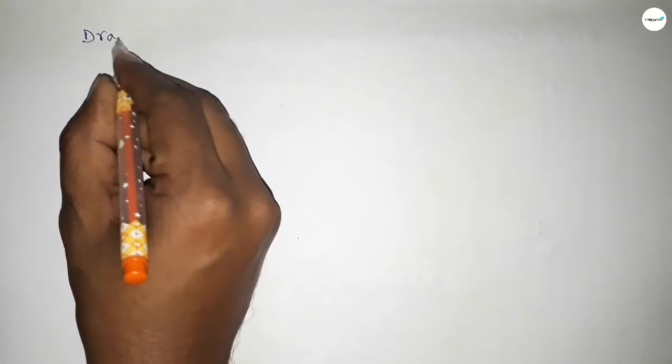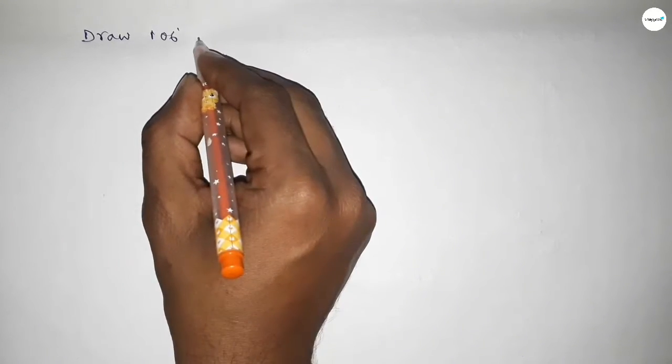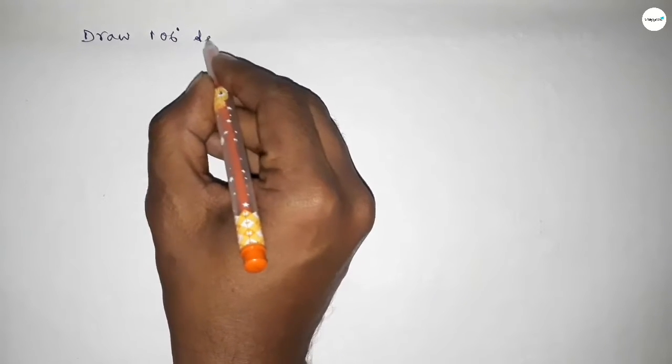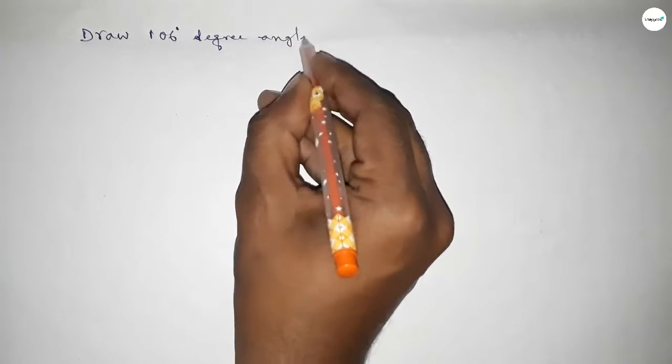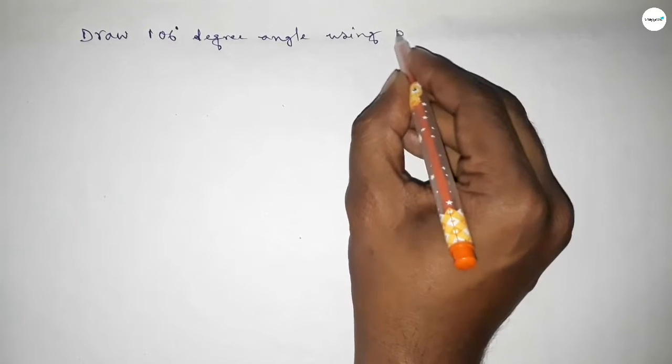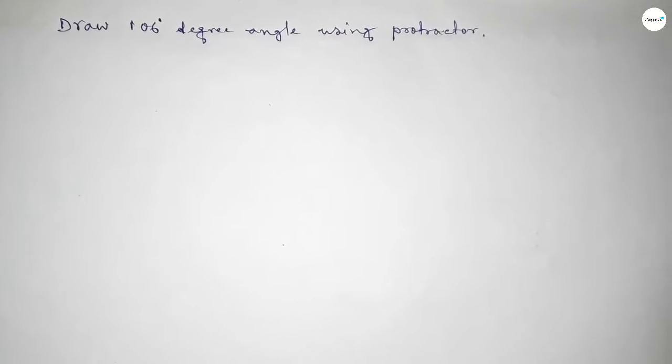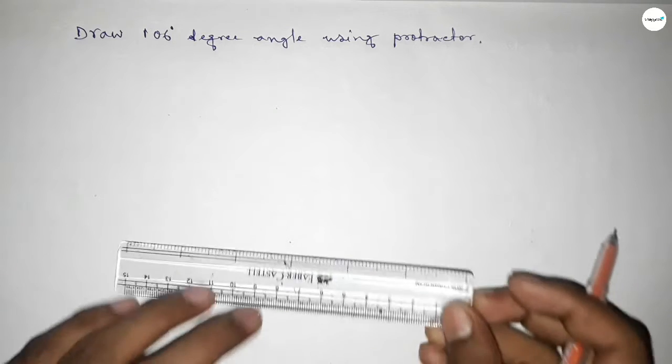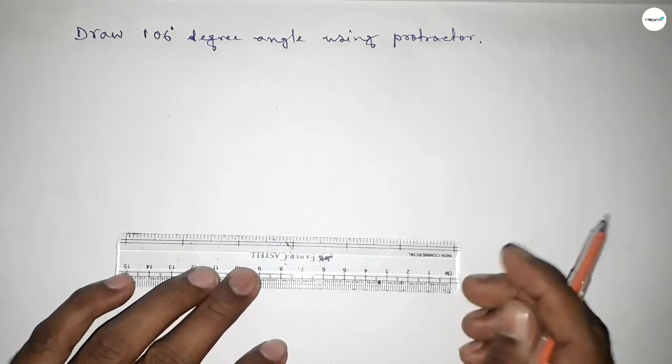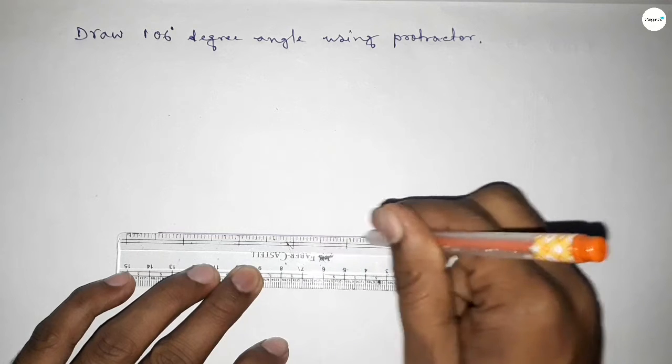Hi everyone, welcome to SI Share Classes. Today in this video, we have to draw a 106-degree angle by using a protractor. So let's start the video. First of all, we have to draw here a straight line of any length.